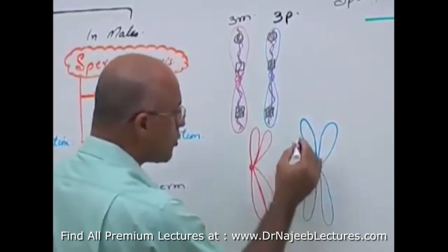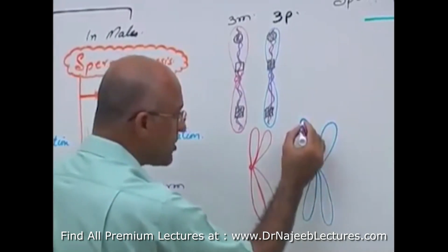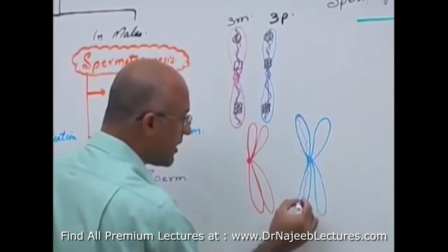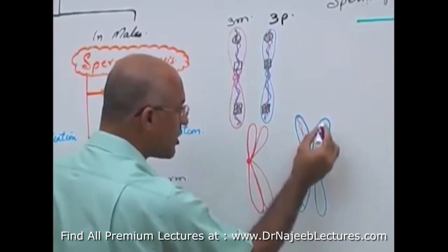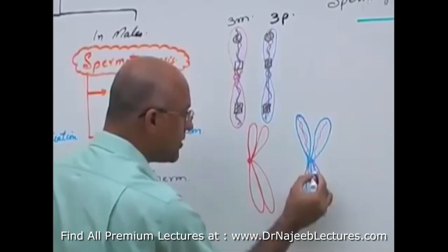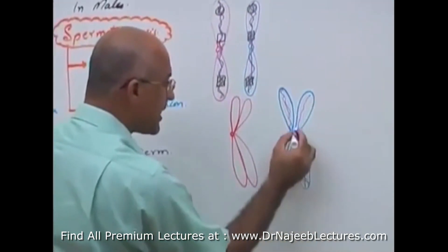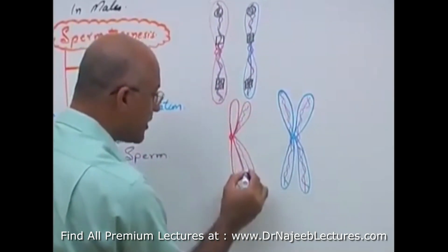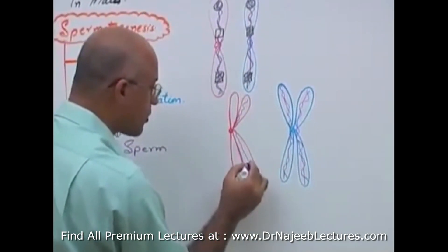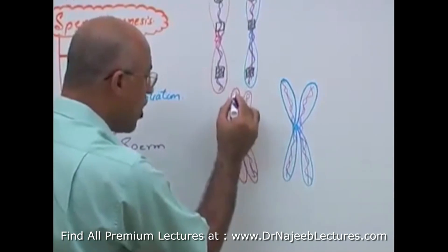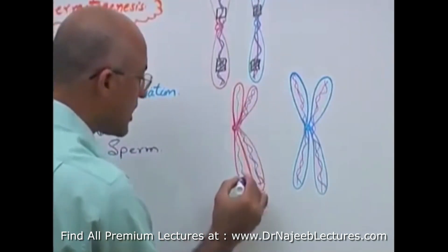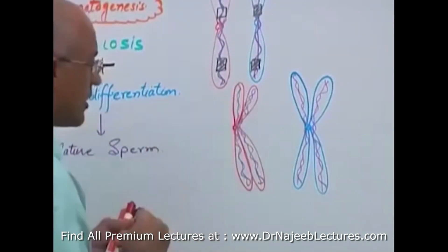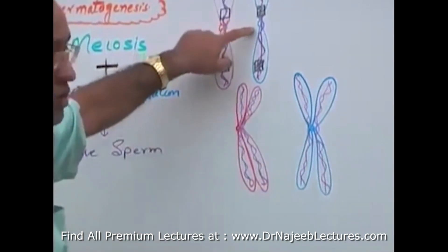In duplicated chromosomes, the DNA material is double because DNA has been replicated. Replication of DNA leads to duplication of chromosomal structure. We can also use another term for this.